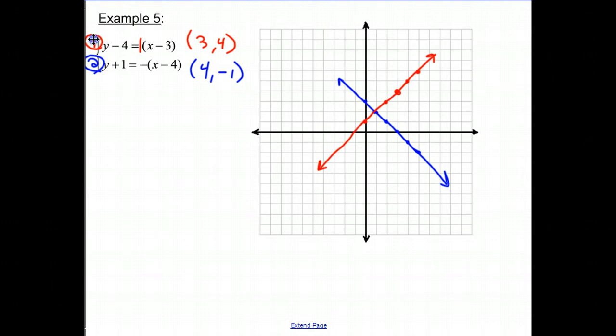And that point at which these two lines intersect, this point right here, which is again 1, 2. That is my answer. That's a solution to this system. That is the point, and the one point, that works for both equations.